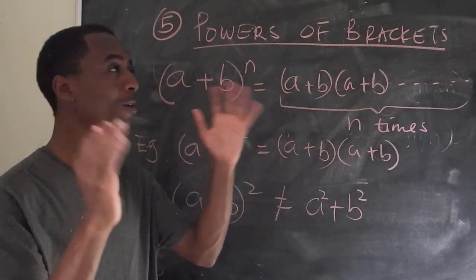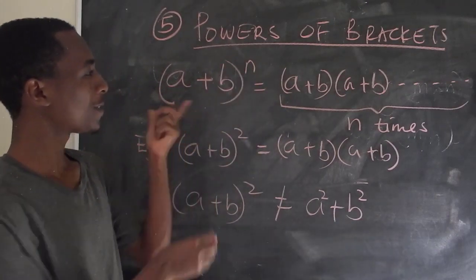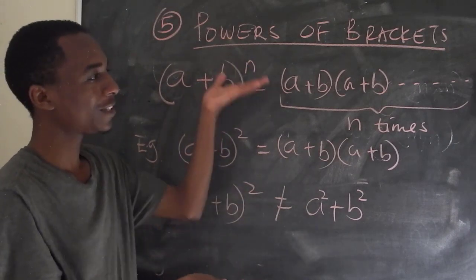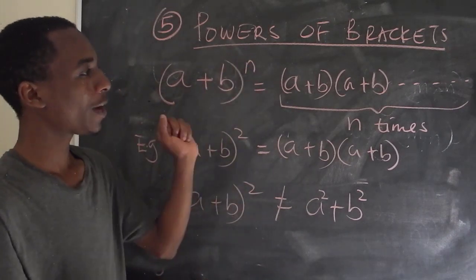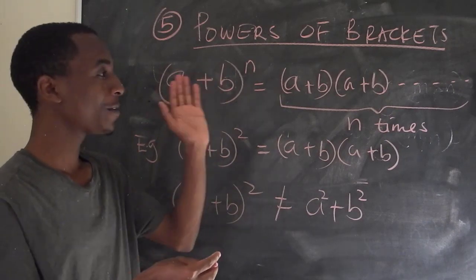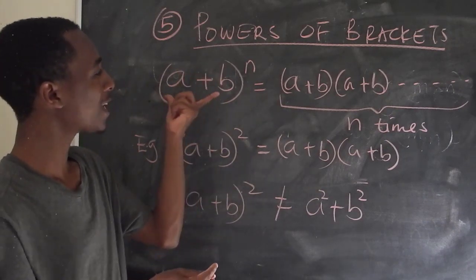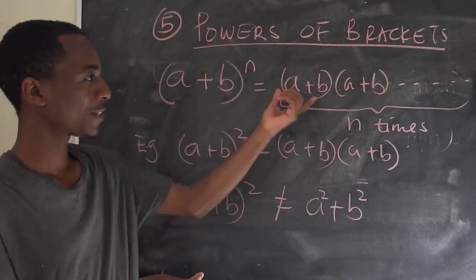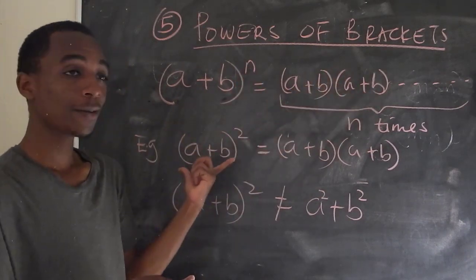So number five is about powers of brackets. What happens if you have a bracket to power a certain exponent index? Okay, so a plus b to the power n, remember what we began with in number one. This means a plus b multiplied by itself n times, as you can see here. So for example,